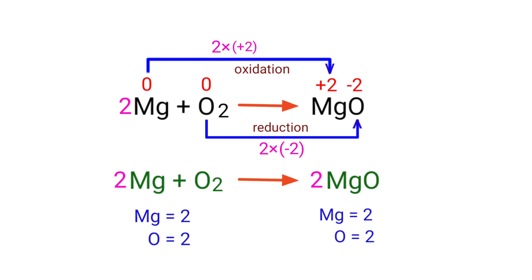The equation is now balanced. There are 2 magnesium atoms and 2 oxygen atoms on both sides.